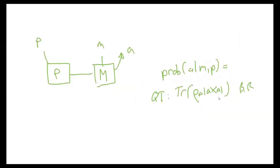In case you haven't come across GPTs before, I want to give you an example of what one of the alternative theories might look like, just to give you an intuitive picture. Here I'm considering a very simple prepare-and-measure scenario. You have a preparation box P and a measurement box M. We have a classical input, which is a choice of preparation, denoted with small p. It outputs the system into the measurement box M, and then we have a choice of measurement.